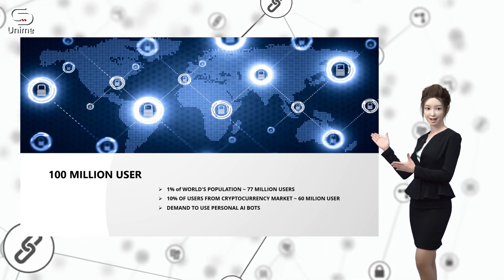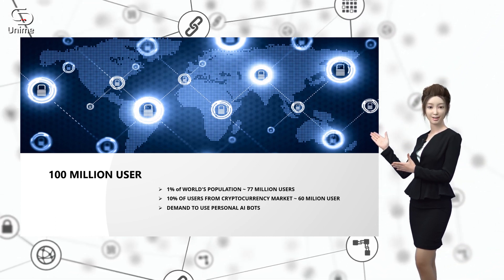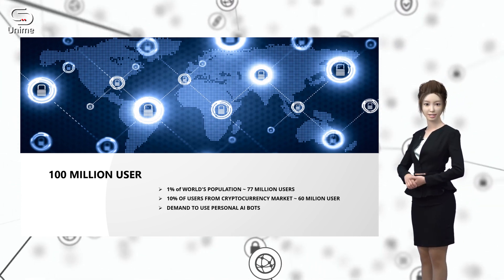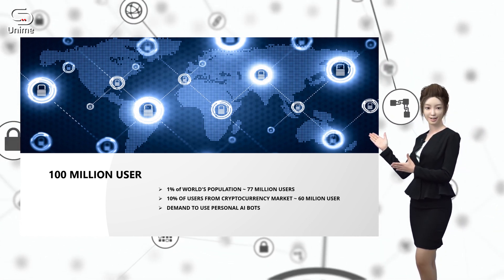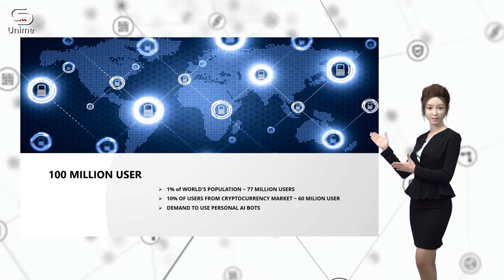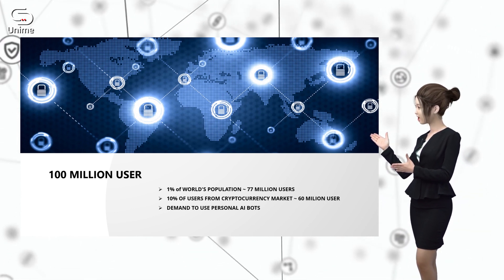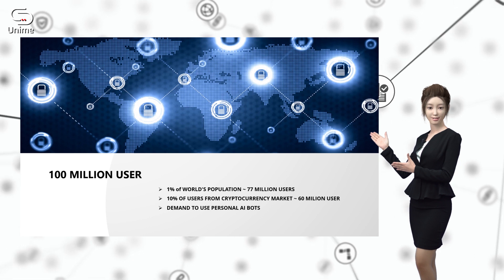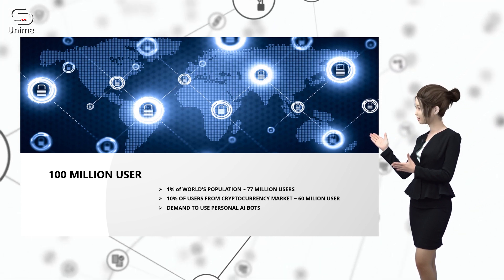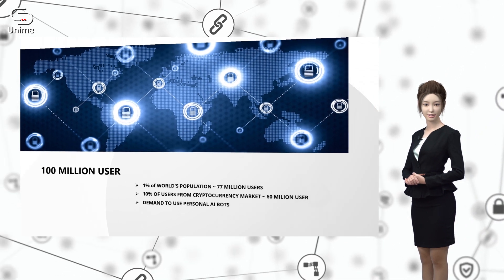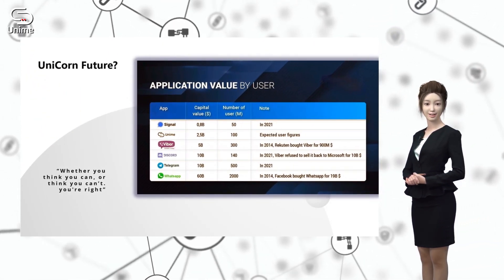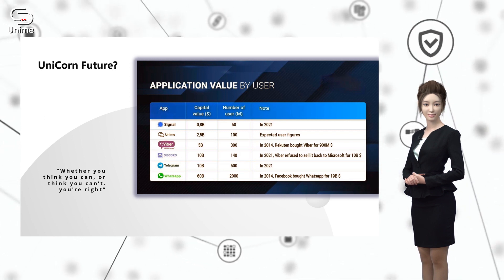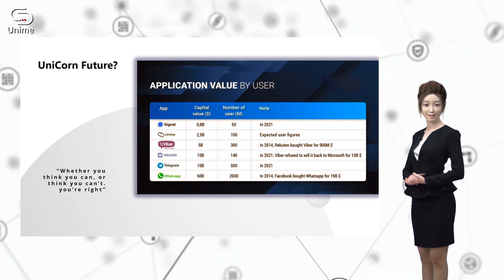A simple calculation: 1% of the global population using UniMe is equivalent to 76 million users. Currently the cryptocurrency market is booming and growing fast with about 600 million users; with 10% using UniMe that's 60 million users. Adding the group of people using personalized AI features, a total of 100 million users in three to five years is completely possible. There are also communities that need security, specialized exchanges for finance, gold, and politicians. With 100 million users, UniMe will be an emerging technology unicorn, comparable to Signal, Viber, Discord, and Telegram. Investing in UniMe is a value-added investment through your expertise and new technology projects.